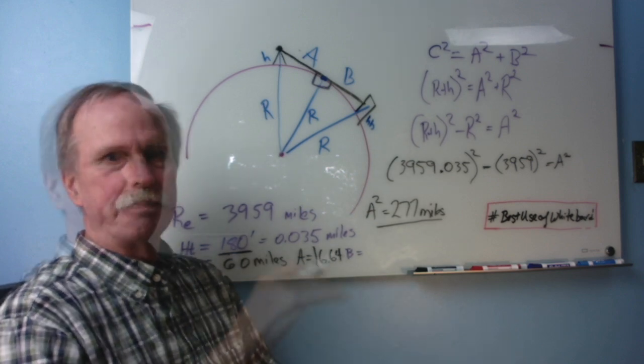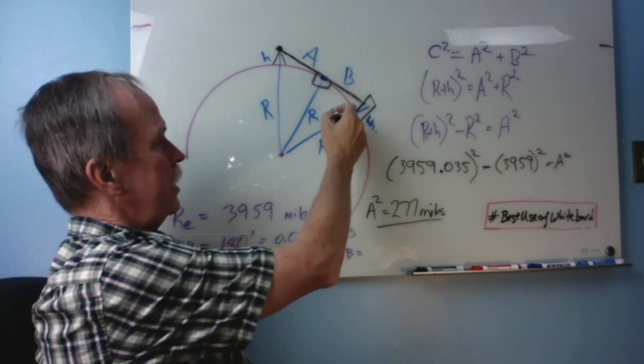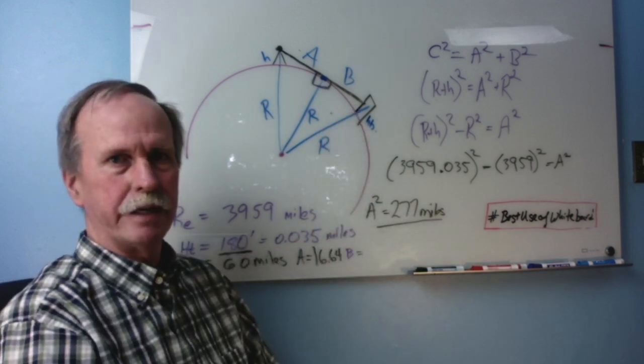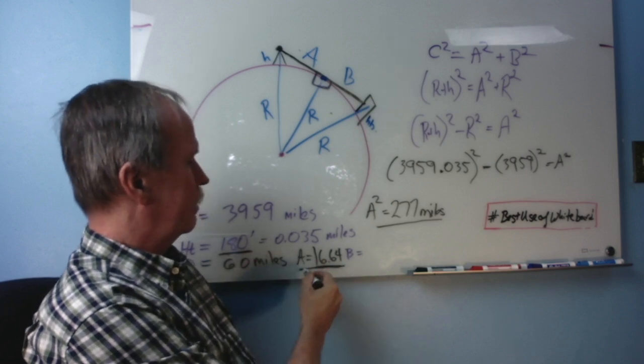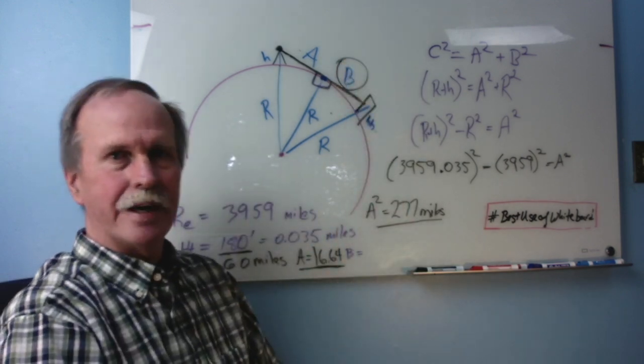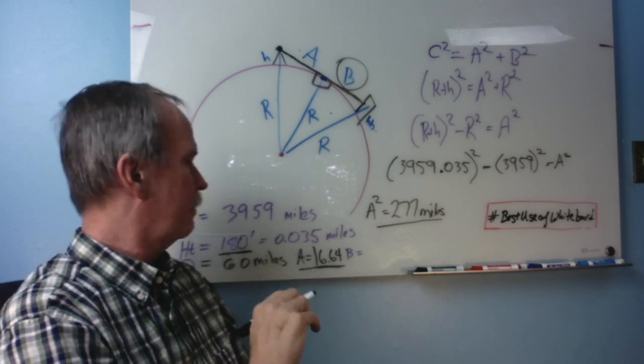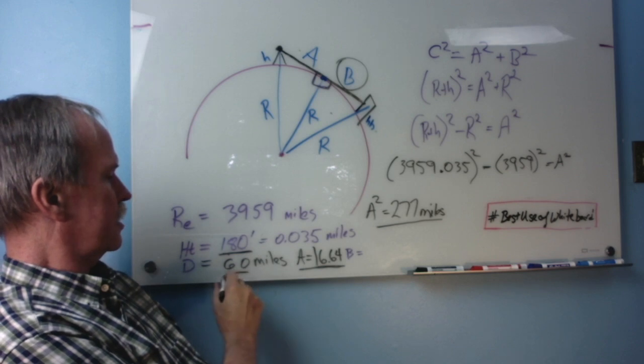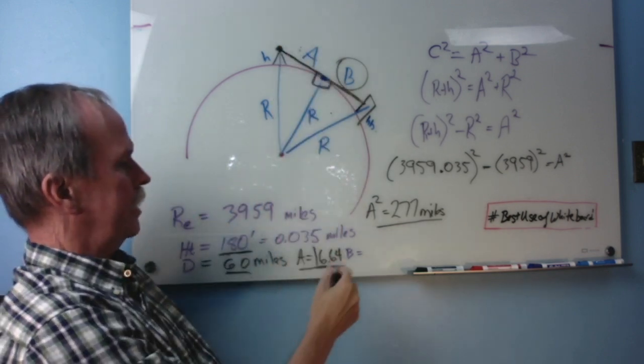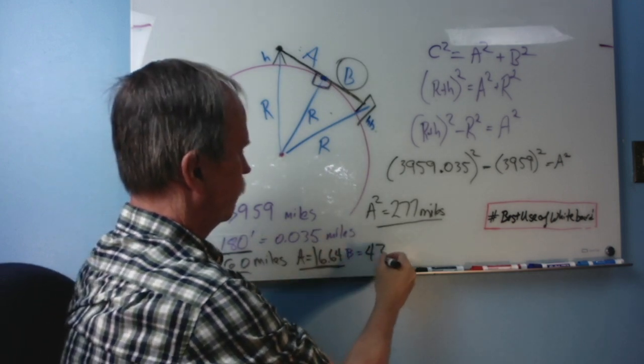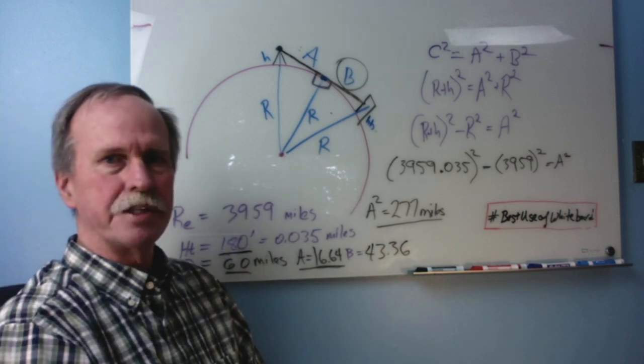Now, we're cooking with gas. Our goal here is to find the hidden height of the building, which means that we need to work with this triangle on the right. The only reason that we needed to find A was to figure out that leg of that triangle. And we can do that very simply. The only thing that we have to do is we take the total distance 60 miles. We subtract A and we come up with B. And that's 43.36 miles.